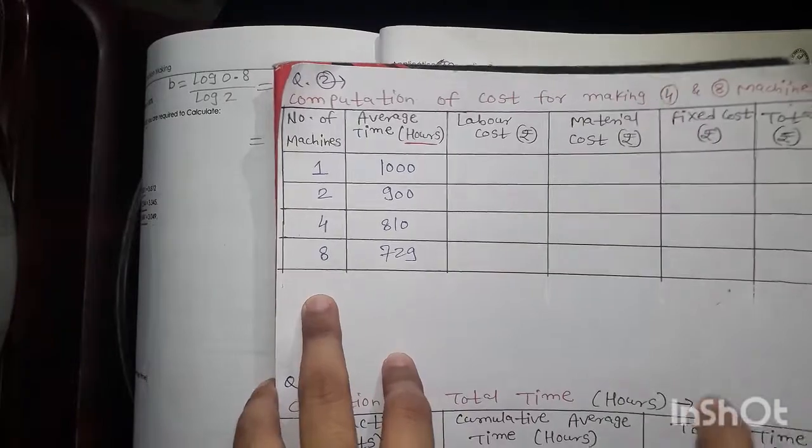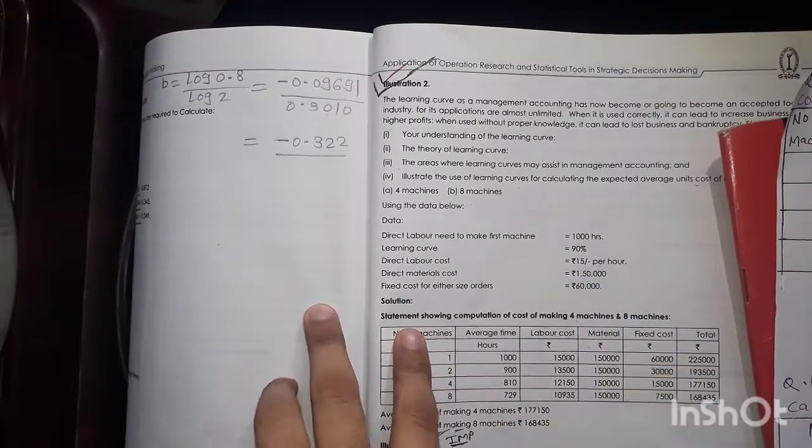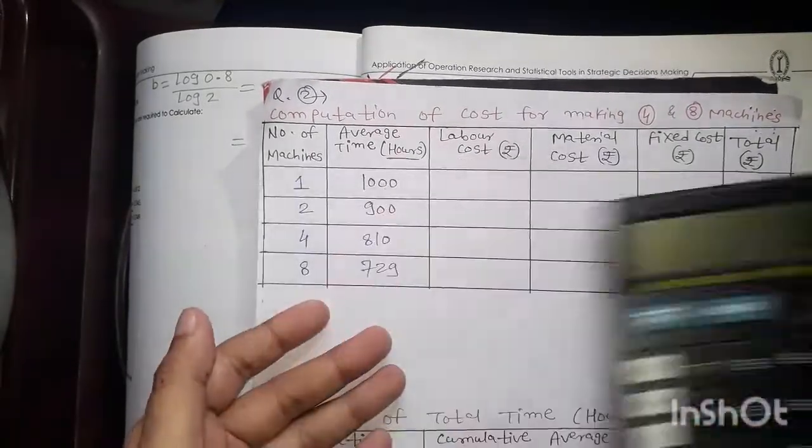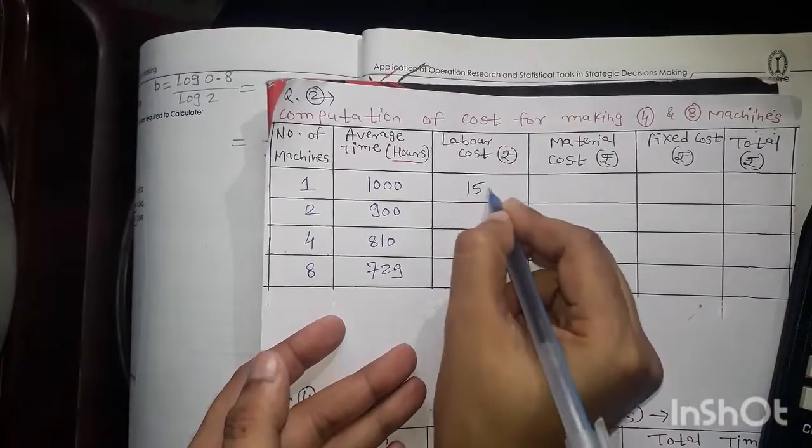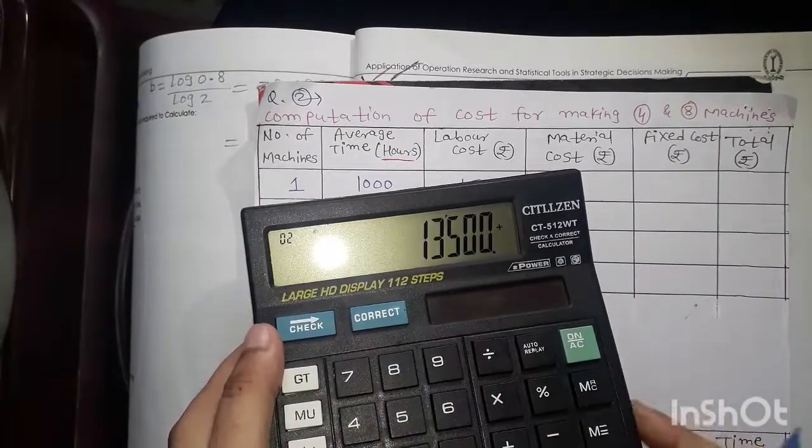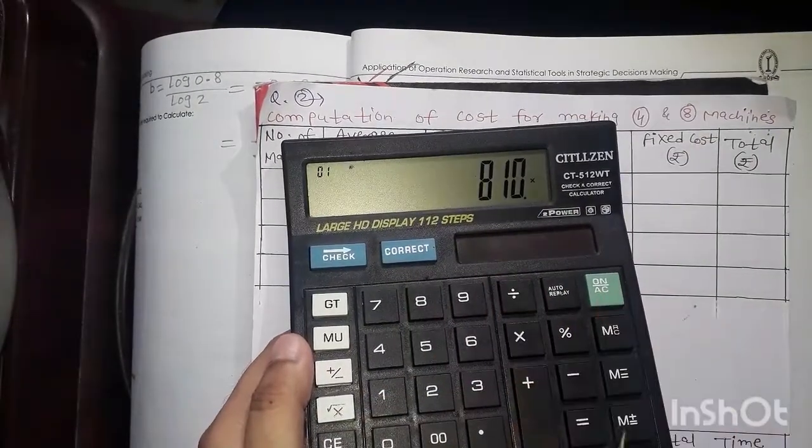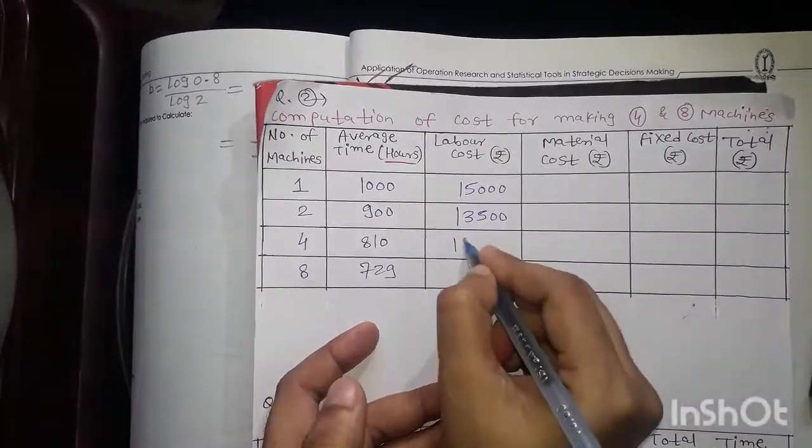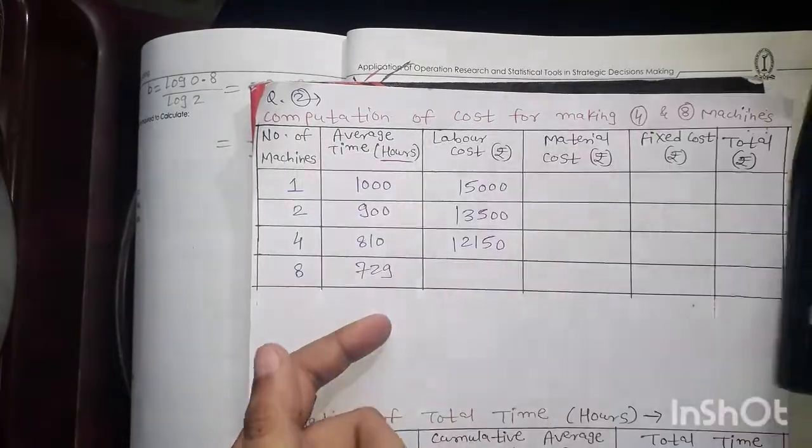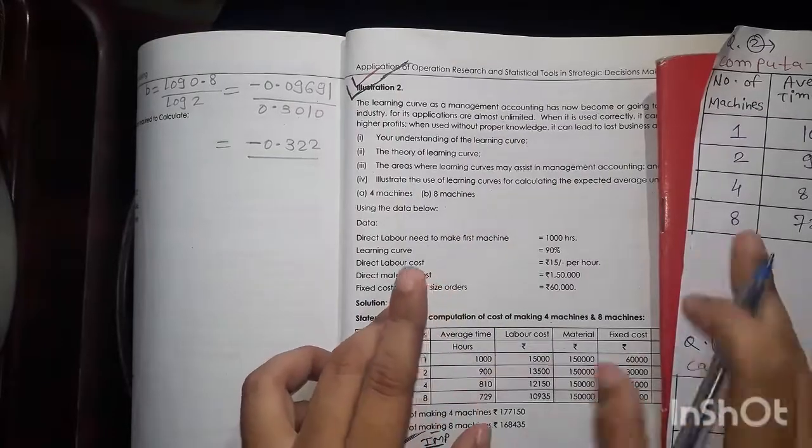Next we will calculate labor cost. For labor cost they have given information. We have used this and this. Now direct labor cost is 15 per hour. So per hour means multiply. In case of first, 1000 hours multiplied by 15, that is 15,000. After that, here 900 multiplied by 15 comes to 13,500. Next is 810 multiplied by 15, it comes to 12,150. Next, 729 multiplied by 15, it comes to 10,935. So here we have completed all the labor cost.